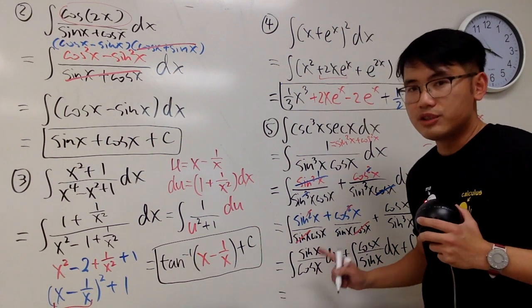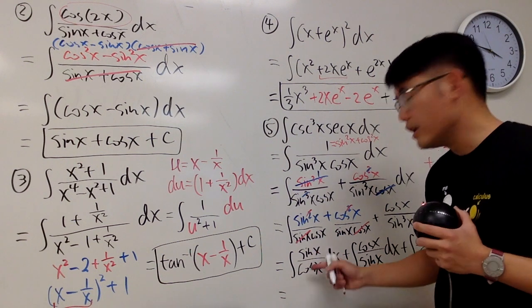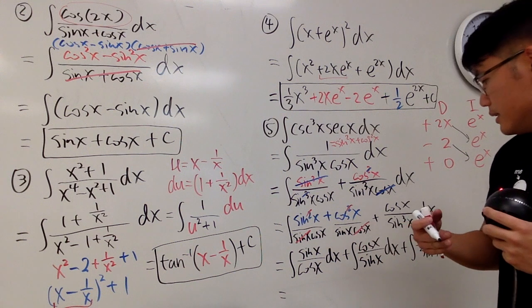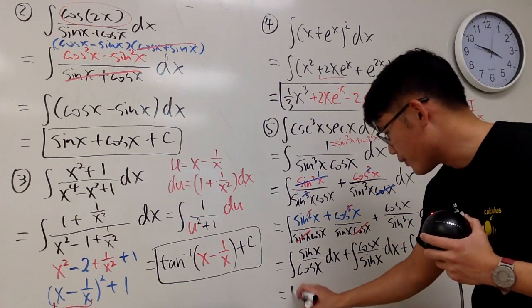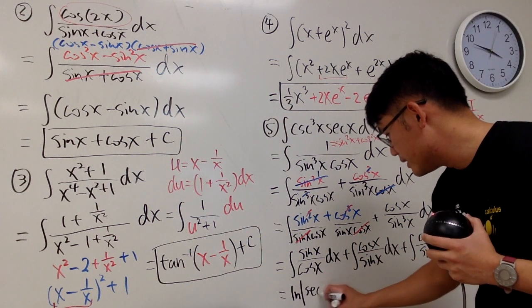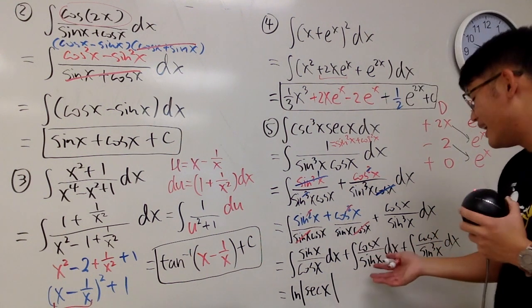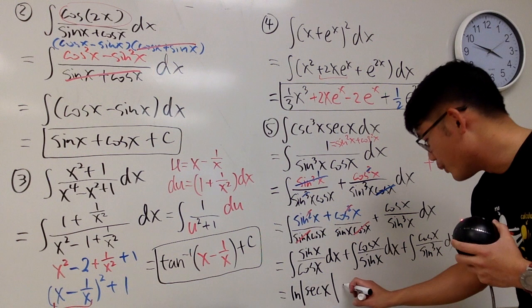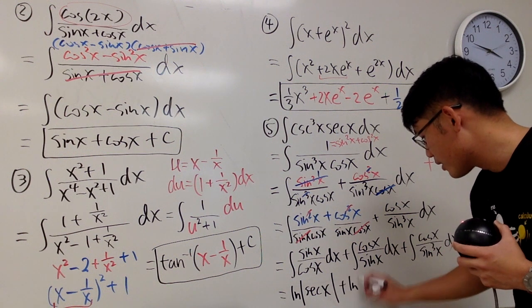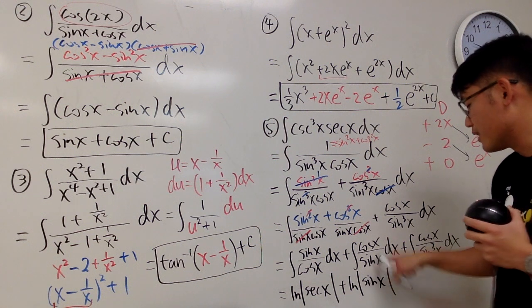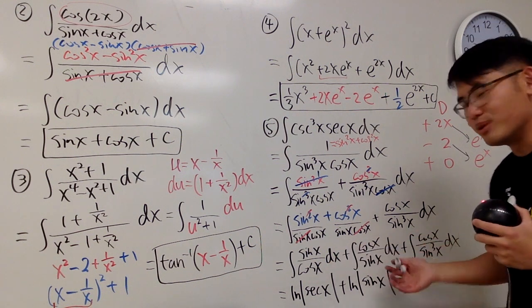All right, so as you guys know, this right here is just tangent, and if you integrate tangent, you get natural log absolute value of secant, so I will just put that down right here for you guys, natural log absolute value of secant x. And this right here is technically cotangent, and of course you can also do u sub, but either way that will tell you this is just the natural log absolute value of sine x, because if you let u equal to sine x, you get that. So everything right here is pretty much similar.